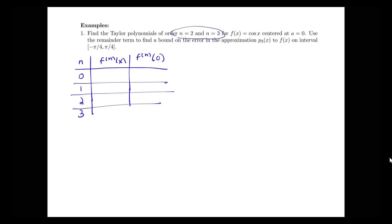I know my zeroth derivative is the original function. So this is just cosine of x. When I plug in 0 into cosine of x, cosine of 0 is 1. My first derivative is negative sine x. Sine of 0 is 0. When I take my next derivative, the derivative of sine is cosine.